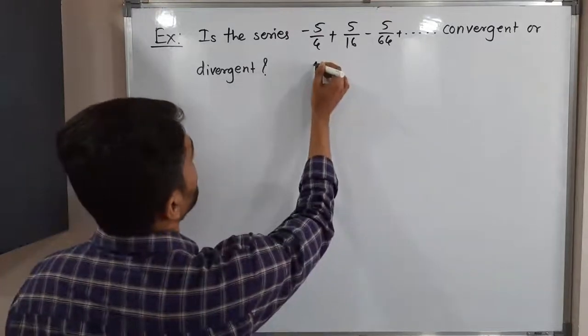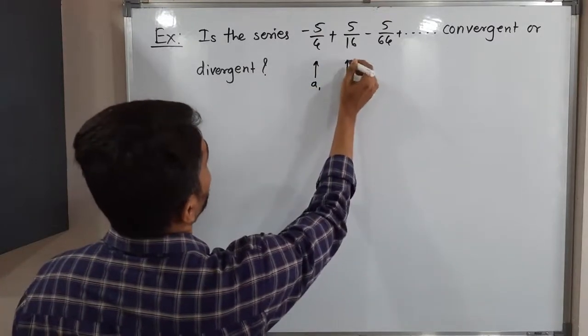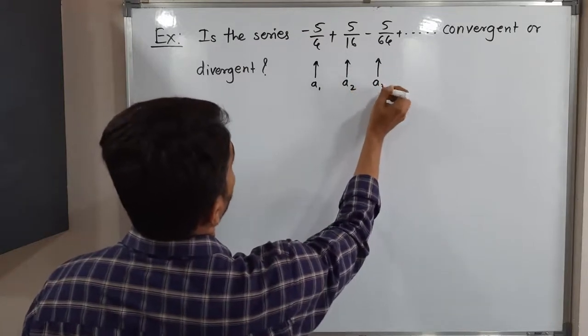So this is the first term of the series we are denoting by A1. This is A2. This one will be A3 and so on.